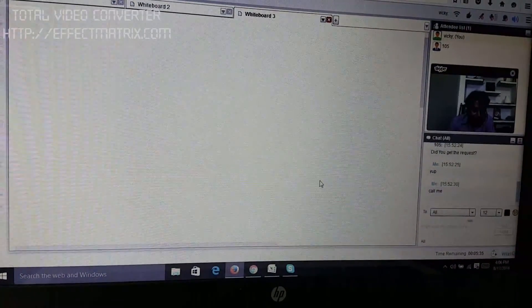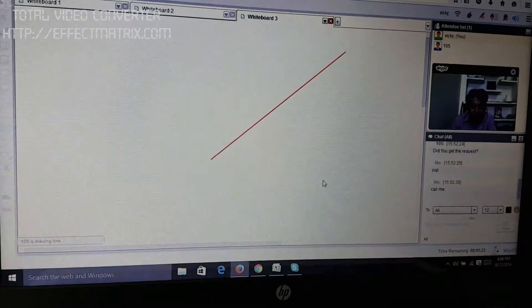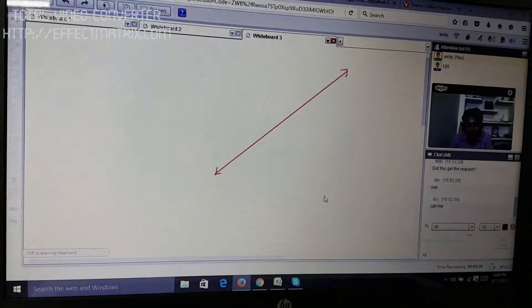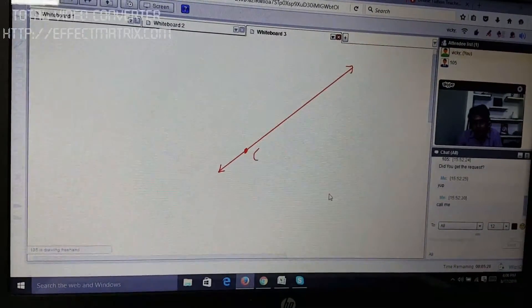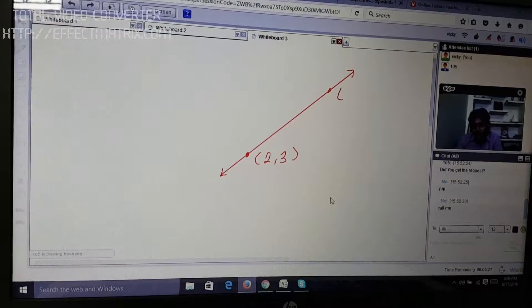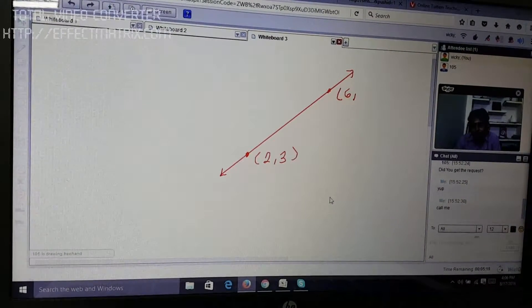Suppose this is a straight line and we must be given at least two points located on a straight line to get its slope. Suppose one of the points is 2, 3. At the same time, the other point has been given to us as 6, 10.